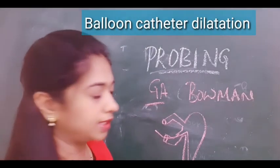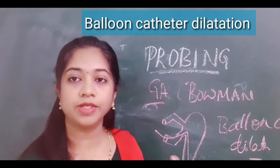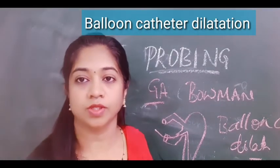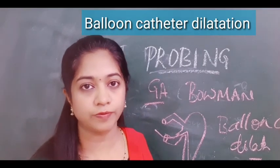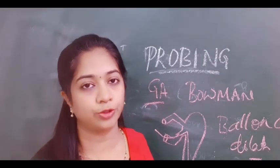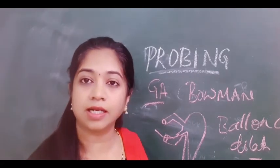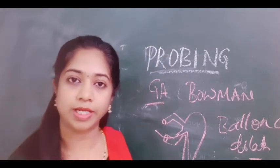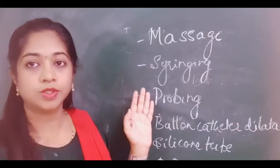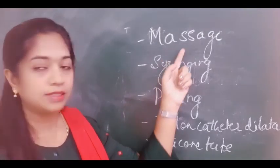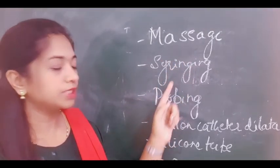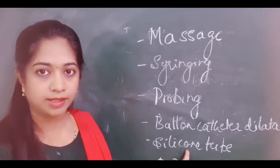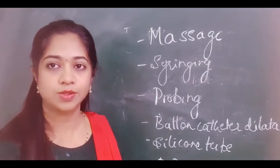The next option is balloon catheter dilatation, where a probe with an inflatable balloon opens up the nasolacrimal duct. If balloon catheter dilatation is also not working, you can go for silicone tube intubation of the nasolacrimal duct. The last resort in the treatment of congenital dacryocystitis is DCR — dacryocystorhinostomy surgery. So the treatment options are: massaging, syringing, probing, balloon catheter dilatation, silicone tube intubation of the NLD, and finally DCR.